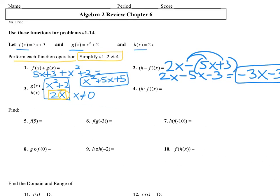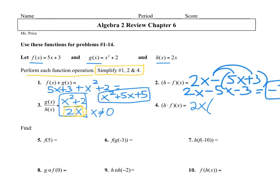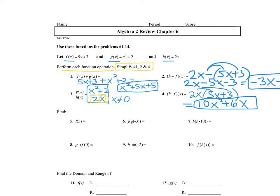Number four, we're going to take function h, which is 2x, times f of x, which is 5x plus 3. This is just a simple distribution problem. So you get 10x squared plus 6x. That's four operations: adding, subtracting, multiplying, and dividing. Hopefully you're pretty good on those. Now let's go on to the next ones.